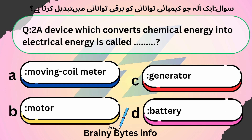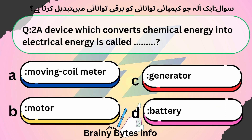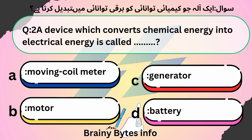A device which converts chemical energy into electrical energy is called: A. Moving Coil Meter, B. Motor, C. Generator, D. Battery. Answer: D. Battery.